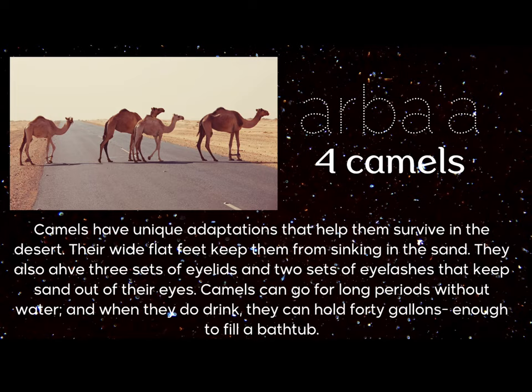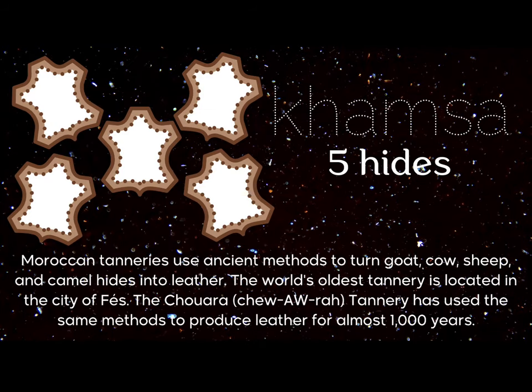Four — arba. Four camels. Camels have unique adaptations that help them survive in the desert. Their wide, flat feet keep them from sinking in the sand. They also have three sets of eyelids and two sets of eyelashes that keep sand out of their eyes. Camels can go for long periods without water, and when they do drink, they can hold 40 gallons — enough to fill a bathtub.